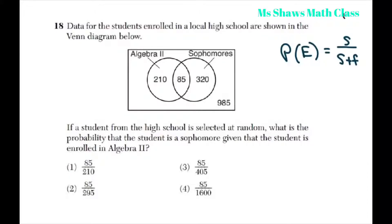So what they're asking for is the probability that the student being enrolled in Algebra 2 is a sophomore. So that would be 85.